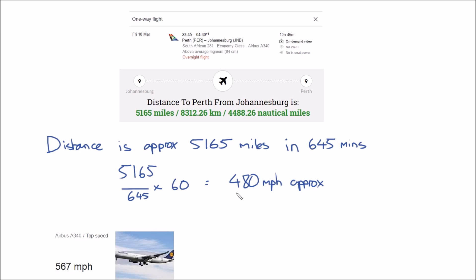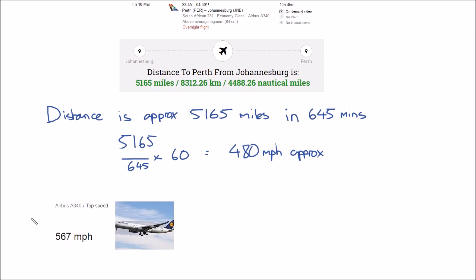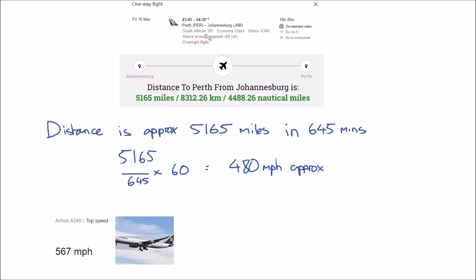And the top speed of this aircraft, which is this model here, is 567 miles per hour. So taking all factors into consideration, this verifies quite nicely—it works out. So what does this mean on a flat earth?